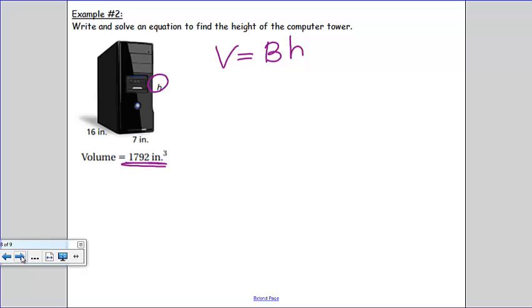This time, we know the volume, so we'll fill that in for V. 1,792 equals the area of your base is a rectangle. That's 16 by 7, and the height, again, is missing, so we'll just leave that as our variable H.